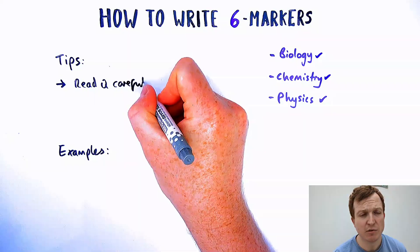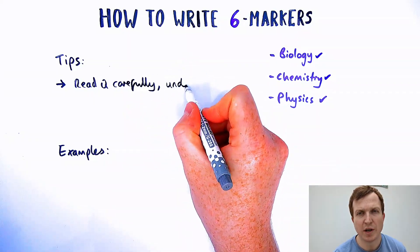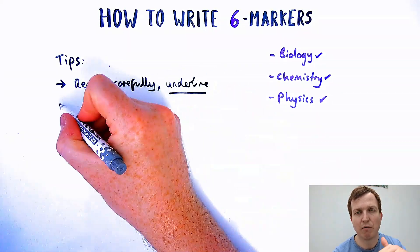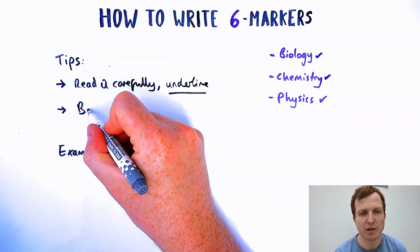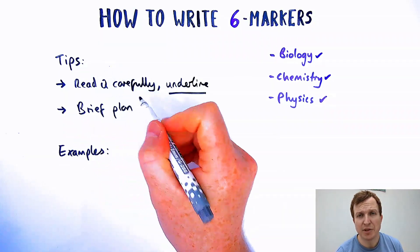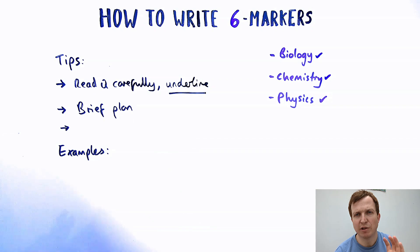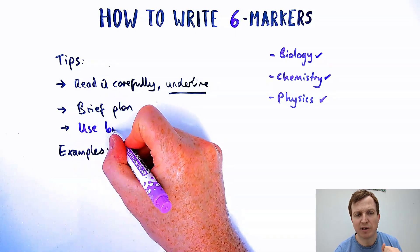So a couple of tips. Make sure you read the question twice, especially with six mark questions. You don't want to start writing until you know exactly what the question is asking. Then make a brief plan. It doesn't have to be long, not like history or English, but just 20 seconds. What am I going to include? What are some key points I need to remember? Write them down because when you're in the middle of your answer you might forget them.